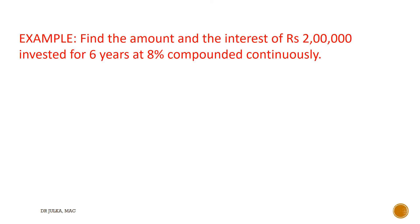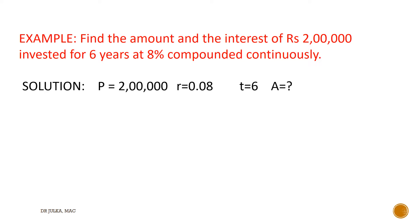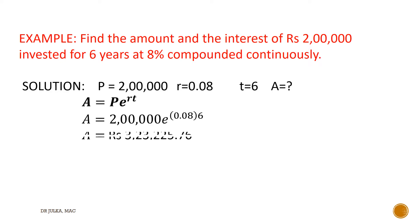In this example, we want to calculate amount and interest. P is ₹2 lakh invested for 6 years at a rate of interest 8% compounded continuously. So P equals 2 lakh, R equals 0.08, and T equals 6 years. We know that when interest is compounded continuously, amount equals P multiplied by E raised to the power RT. Putting in the values, using a simple calculator, we get the amount of ₹3 lakh 23,225.76.